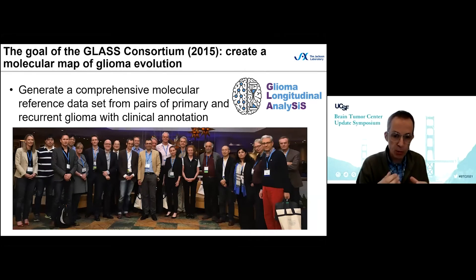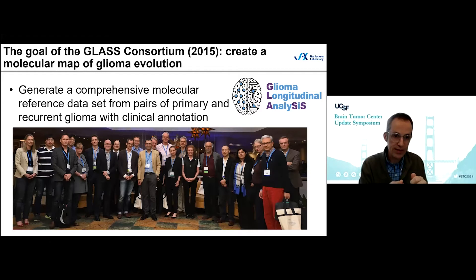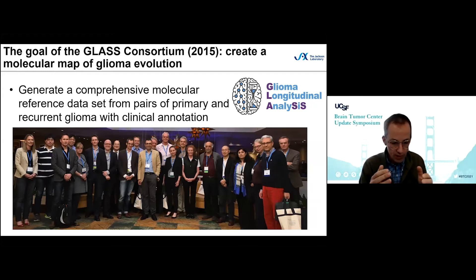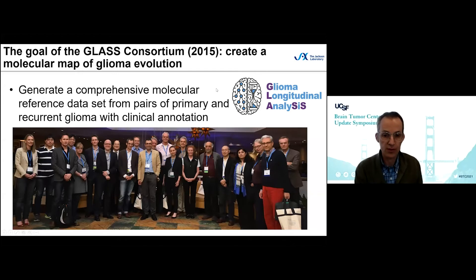Motivated by positive momentum from the Cancer Genome Atlas, and by the recognition that we needed to understand the evolutionary patterns of glioma beyond just characterizing untreated tumors, we initiated a consortium in 2015 called the Glioma Longitudinal Analysis, or GLASS consortium. The purpose is to create a molecular map of glioma evolution — a comprehensive molecular reference dataset, similar to TCGA but from pairs of primary and recurring glioma with clinical annotation. We have enjoyed much involvement of the UCSF group in GLASS.